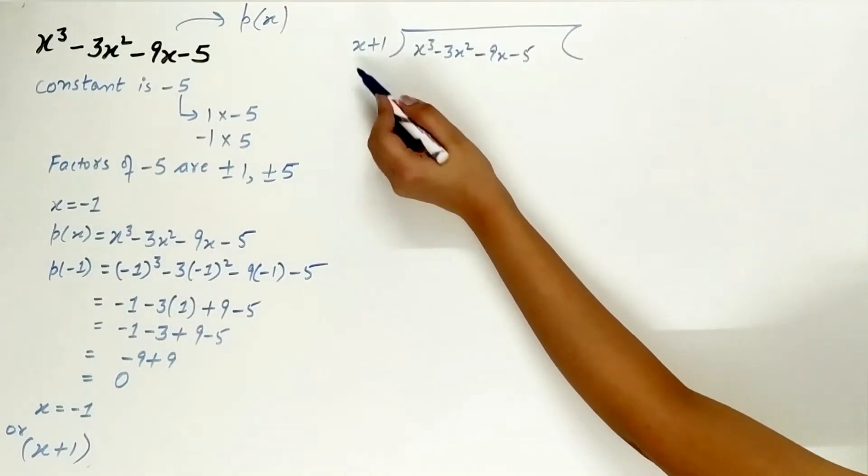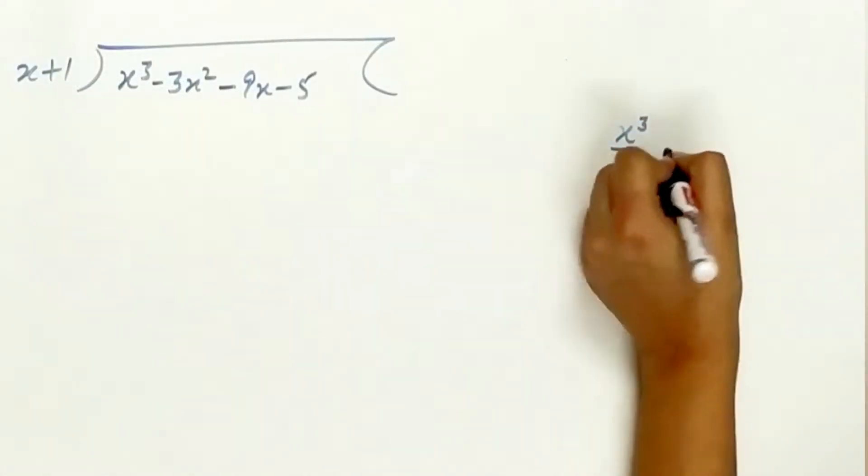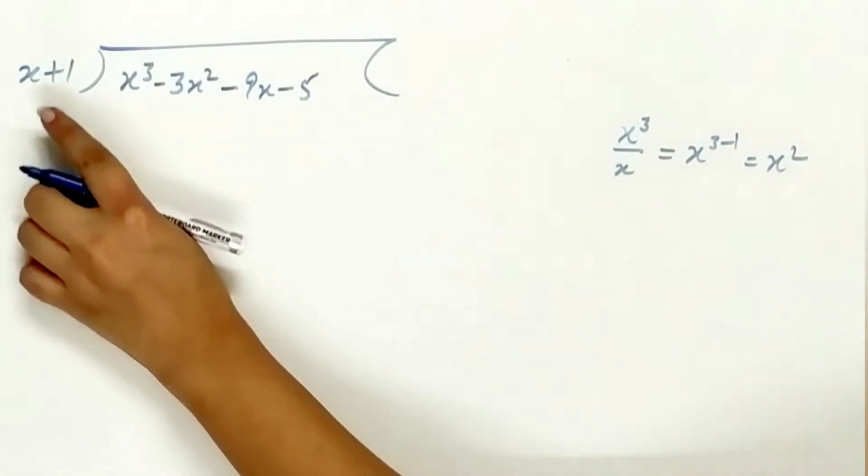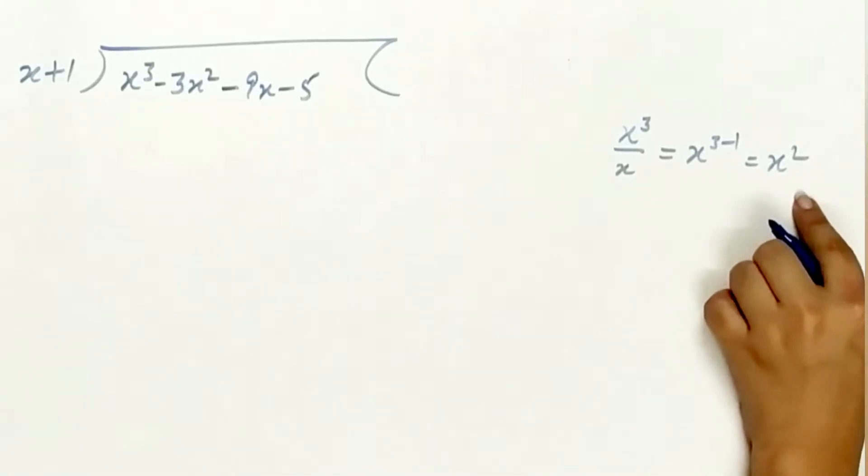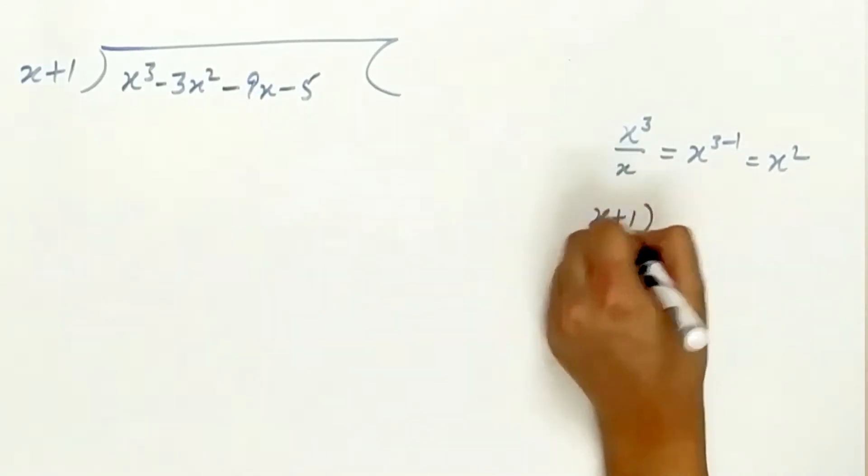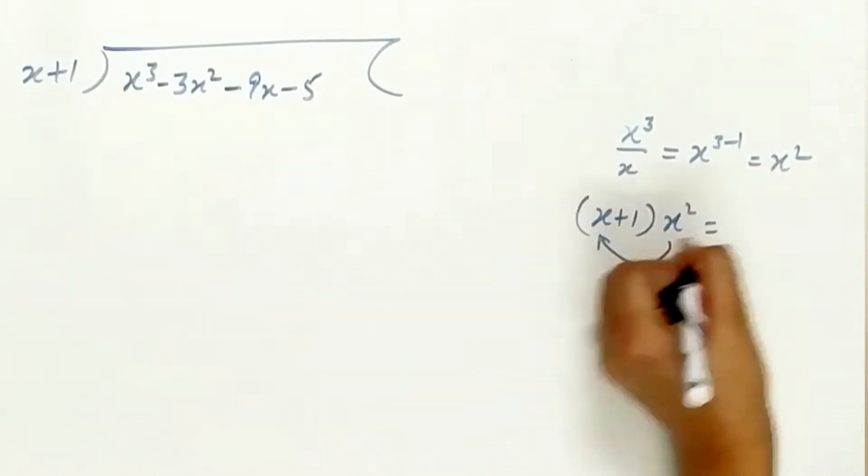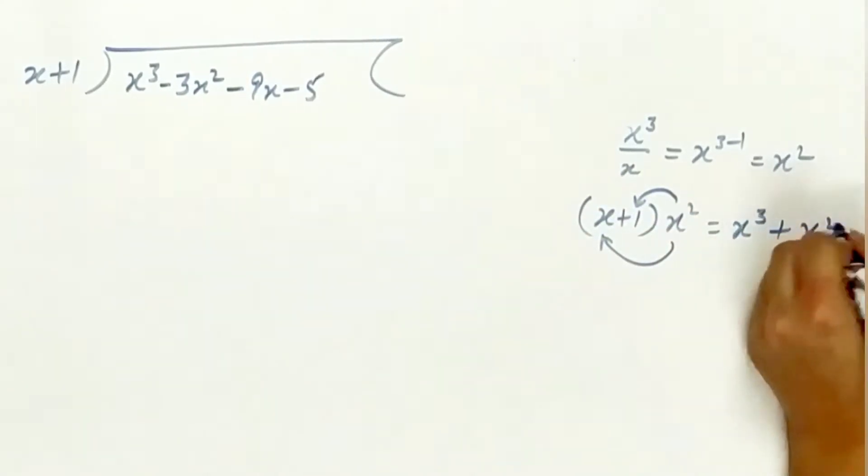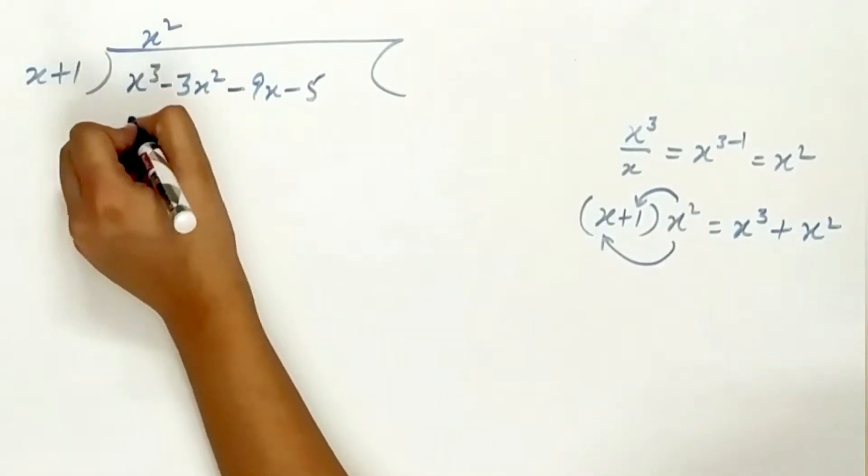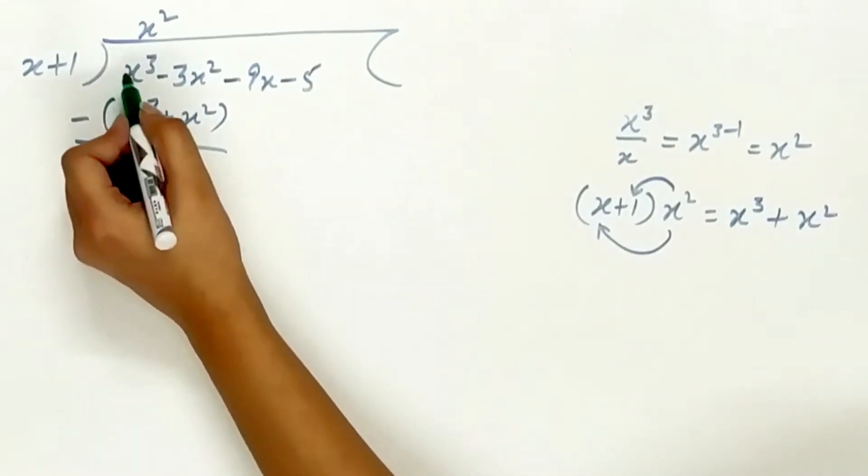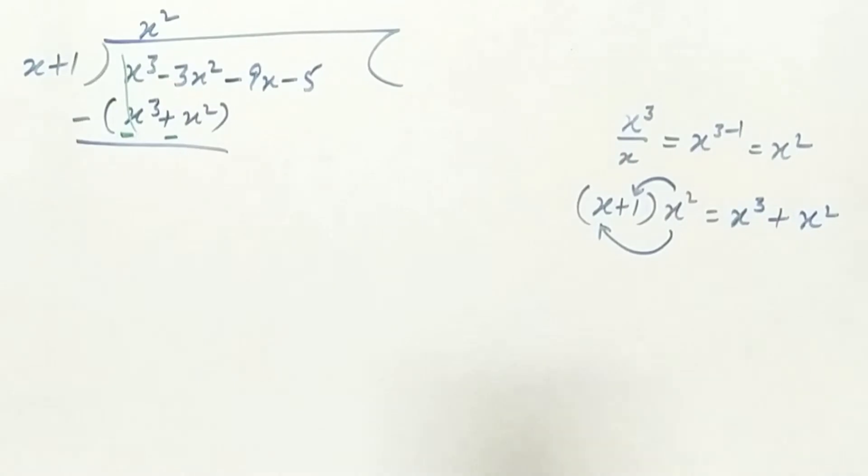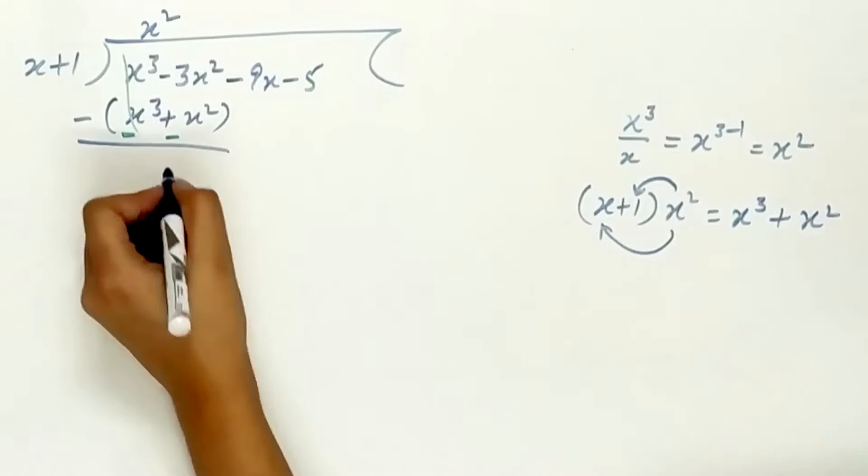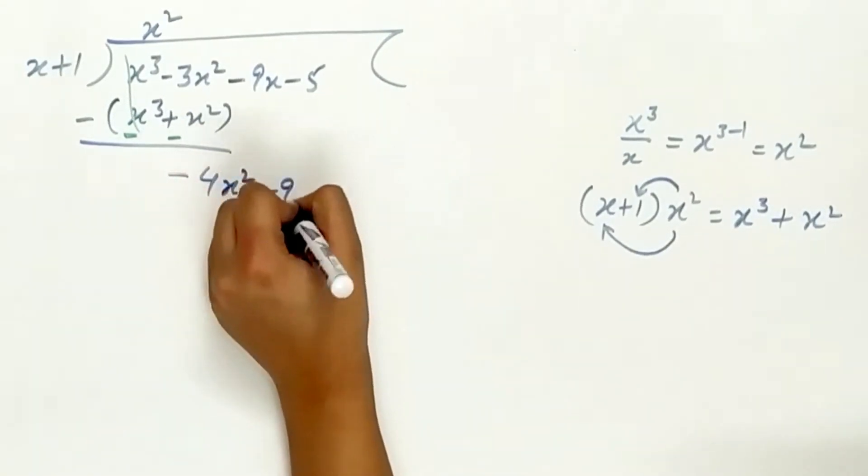Divide x cube by x, which is equal to x square. x square multiply x is x cube. x square multiply 1 is x square. Plus x cube minus x cube is 0. Minus 3x square minus x square is minus 4x square. Write the remaining terms.